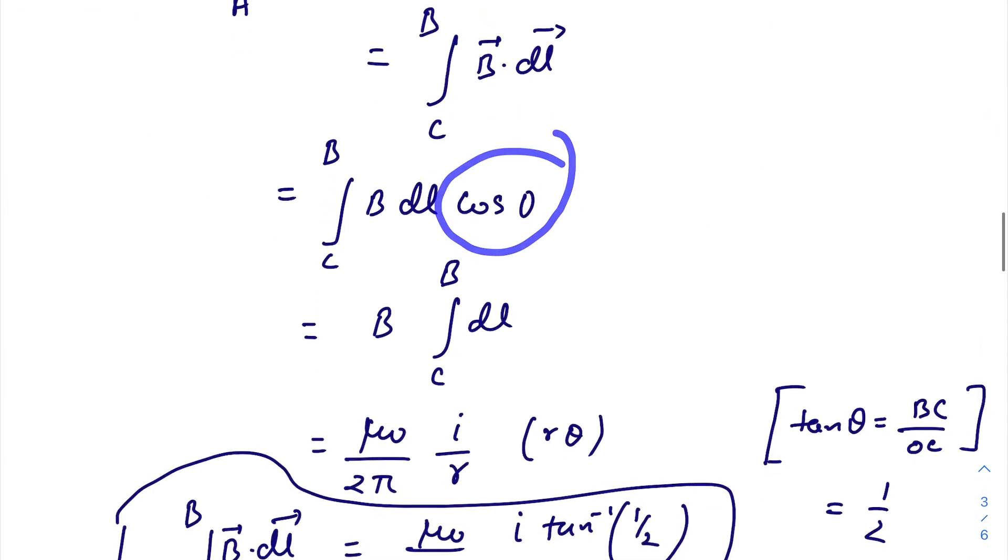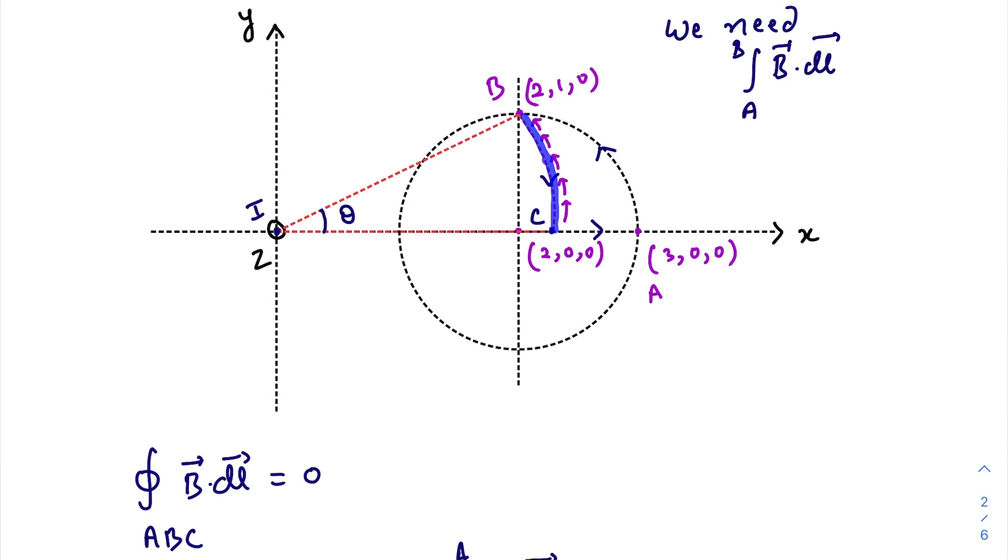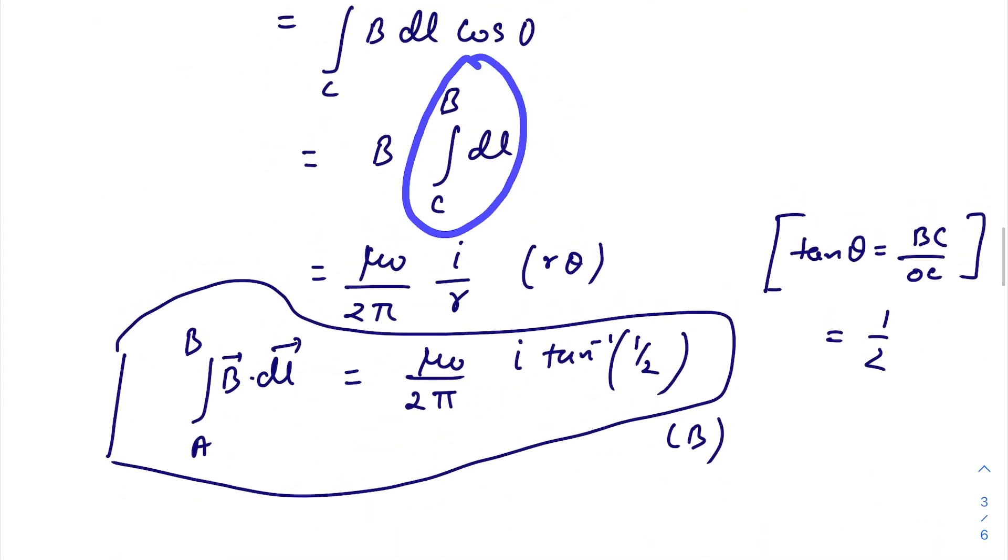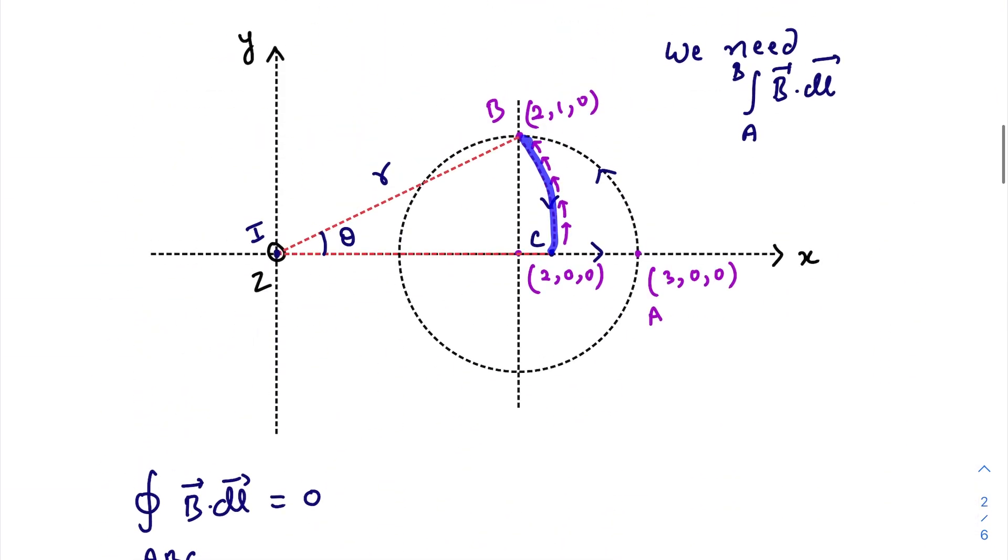So cos(0), we take B out from the integration. The integration C to B of dl is nothing but the length of this arc, which is r times theta.